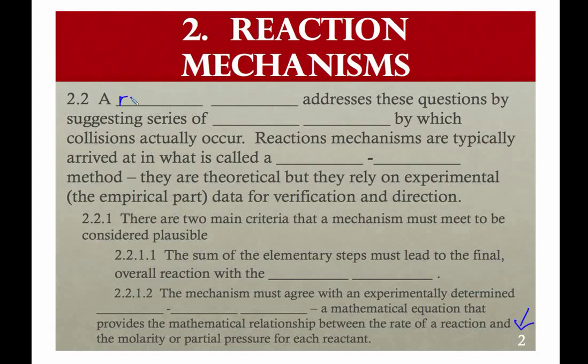Now a reaction mechanism addresses those concerns that we have, trying to address what happens at the molecular level. Which bonds are being broken? Which bonds are being formed? And in what order is all of that happening? And this is suggested by suggesting a series of, this is a keyword. There's a vocab list at the end that can help you because there's a lot of terminology here. And we're going to look at a series of elementary steps by which collisions and then the overall reaction occurs.